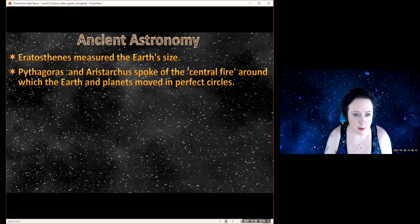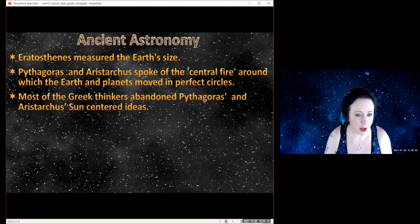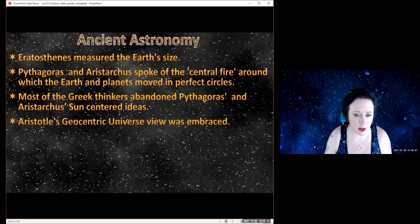Eratosthenes measured the size of the earth. There were other people around the same time who were talking about the idea that the earth and the other planets moved around a central fire, the idea that the sun was in the center, not the earth. But this didn't really catch on. Most people didn't like this idea, mainly because of Aristotle and his idea that the earth was stationary.